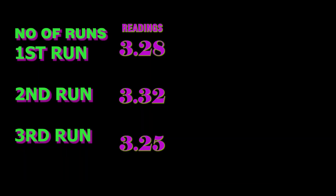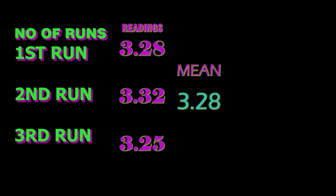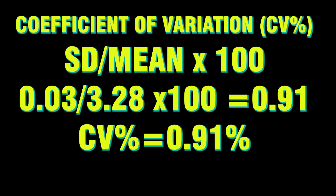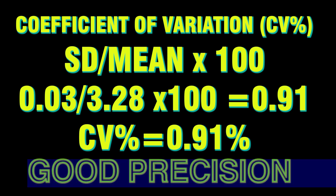How does the instrument check the coefficient of variation percentage? In example one, there are three OD readings: 3.28, 3.32, and 3.25. The mean for the three readings is 3.28, the SD value is 0.03, and dividing SD by the mean gives a coefficient of variation percentage of 0.91%, which is very good.